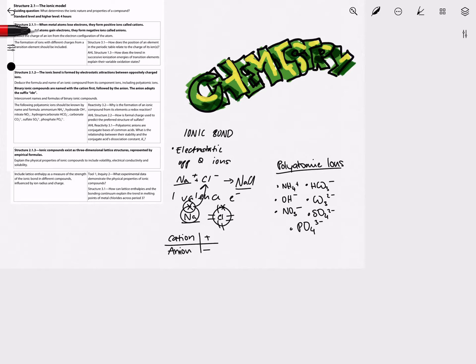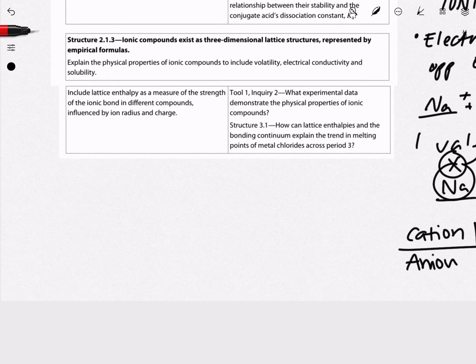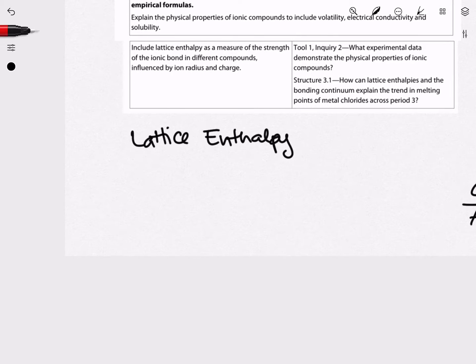Next up, let's look into lattice enthalpy and what this means. Lattice enthalpy, as we see here in the specification, is used as a measure of the strength of the ionic bonds in different ionic lattices. But more specifically, it refers to the specific energy, E, that is required to form a gaseous ion from one mole of an ionic solid.